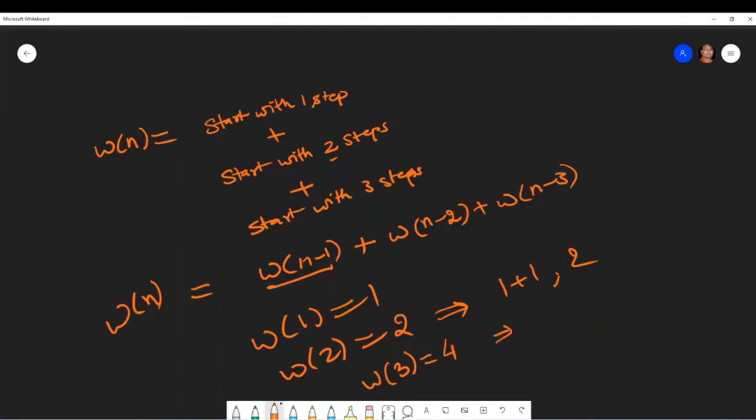For three it should be four, right? Let's see what are those: one plus one plus one, one plus two, two plus one, and three. So you missed one. Yes, okay.